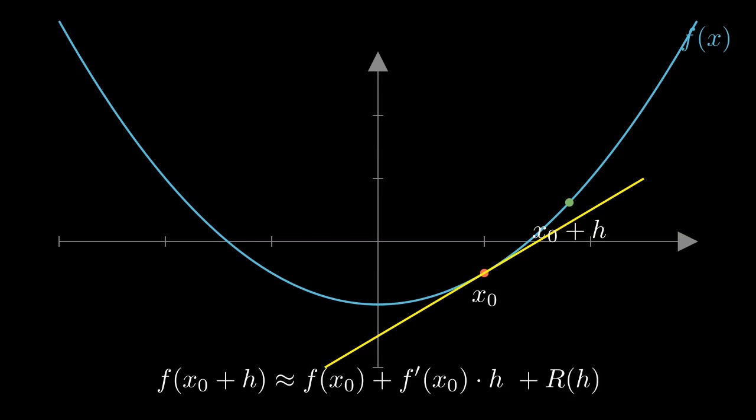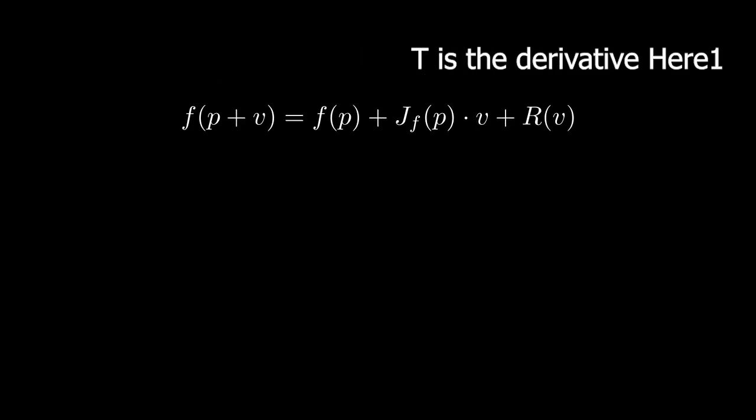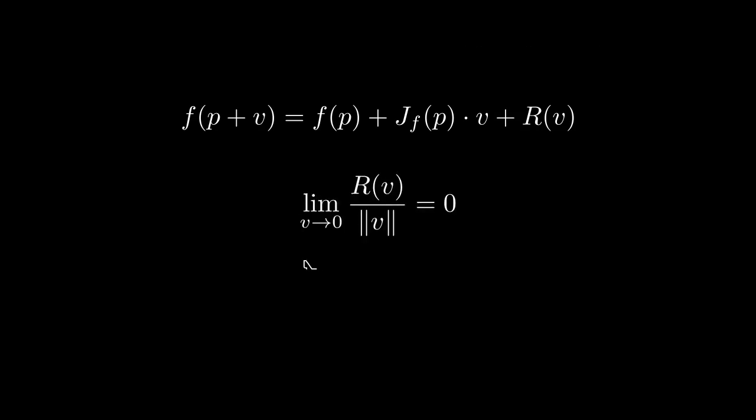So we can say another definition for the derivative of the function and this definition works in higher dimensions. So we define f of p plus v is equal to f of p plus t of v plus r of v, where t is a linear approximation as we saw in the previous example and r is a function that is sublinear and this is the definition of what a sublinear function is. Now let's see two examples to clarify some confusions that you may have had in the past.